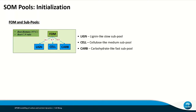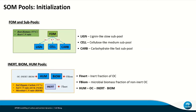All the SOM pools need to be initialized before running a simulation. The initial carbon and nitrogen amount of FOM is normally estimated using root biomass from the previous season and root C2N ratio. FOM in EPSIM is further separated into three sub-pools: a lignin-like, a cellulose-like, and a carbohydrate-like sub-pool with increasingly faster decomposition rate. The initial sizes of the inert, BOM, and HUM pools are estimated using the soil organic carbon percentage, soil C2N ratio for HUM and inert pools, and soil microbial C2N ratio for the BOM pool.